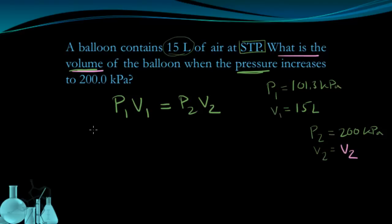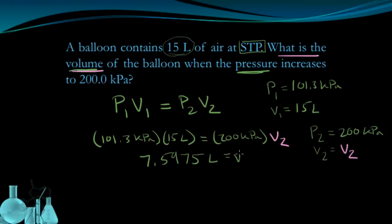Now I can start setting this up. 101.3 kPa, kilopascals, times 15 liters equals 200 kilopascals times V2, my unknown. Now if I go through the algebra, I'm going to see that V2 equals 7.5975 liters for my V2.